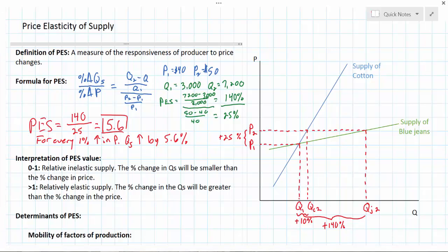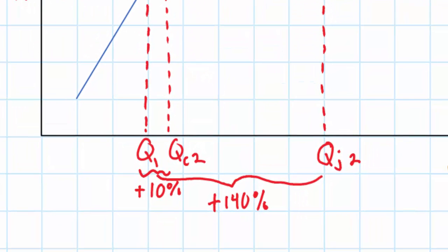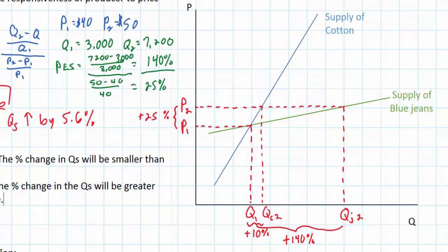Let's have a look at our graph. In addition to blue jeans, I've also graphed the supply curve for cotton. As you can see, a 25% increase in the price of blue jeans led to a 140% increase in the quantity supplied of blue jeans, reflecting a highly elastic supply curve. The slope of the supply curve for blue jeans is relatively flat. A particular percentage increase in price will lead to a much larger percentage increase in quantity supplied as we move along a flatter supply curve. A relatively steep supply curve, like that for cotton in our graph, represents relatively inelastic supply. The same 25% increase in the price of cotton led to only a 10% increase in the quantity supplied of cotton.